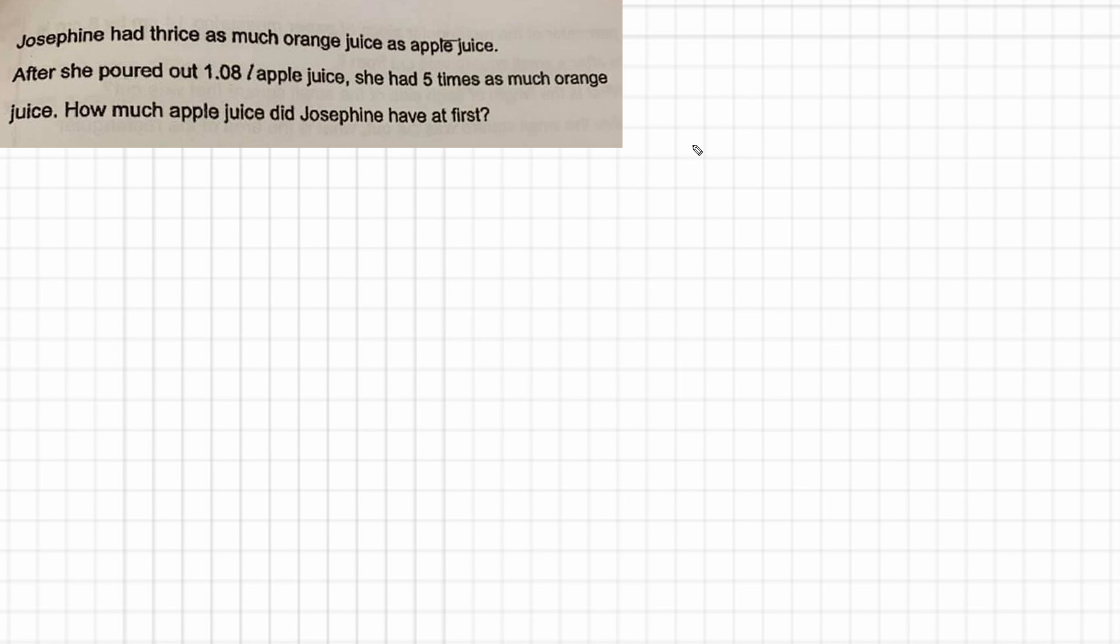Josephine had thrice as much orange juice as apple juice. I only ever see the word thrice, by the way, in Singapore maths bar model questions, but there we go. So Josephine had thrice or three times as much orange juice as apple juice.